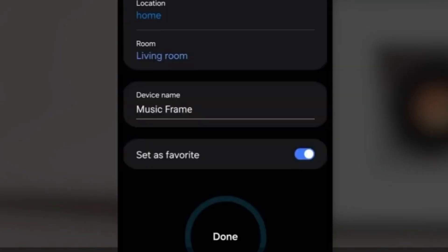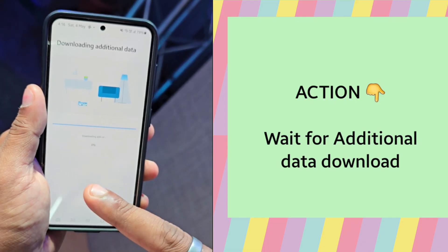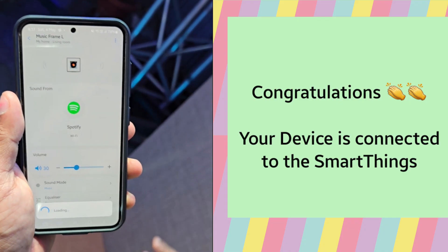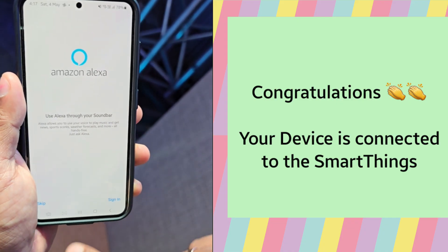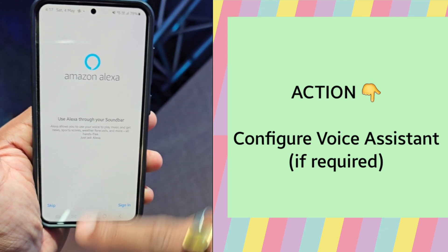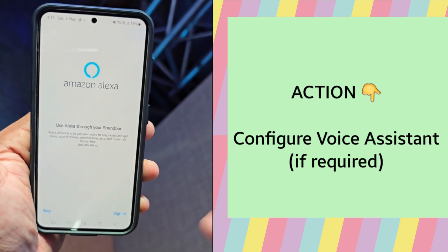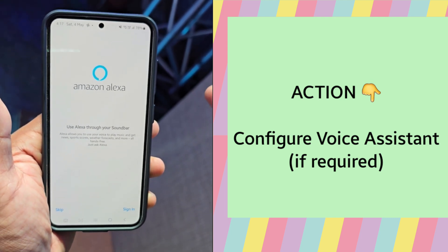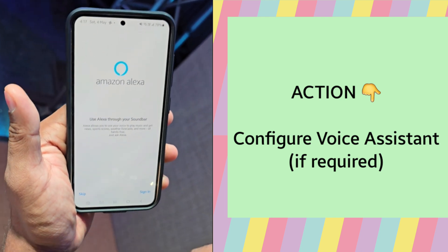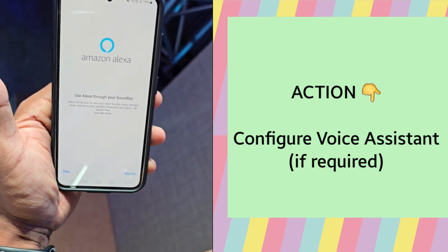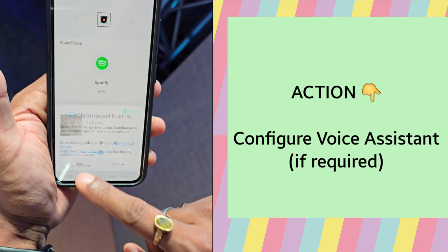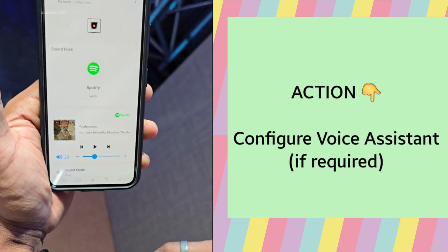I press done. It will be downloading some add-on data and now this device is connected. I have got an option to choose which virtual sound assistant I want. I want to choose Amazon Alexa, but it will ask me to sign in, so I am skipping this. I am skipping the Chromecast also because that was not my goal.